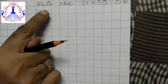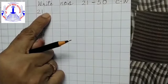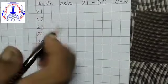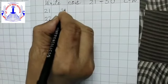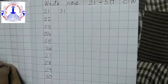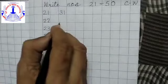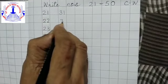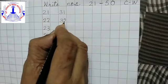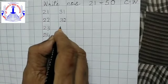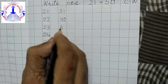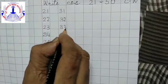Now after 21 leave 1 block and then write 3 and 1, 31. After 31 what comes? 32. 3 and 2, 32. 3 and 3, 33.